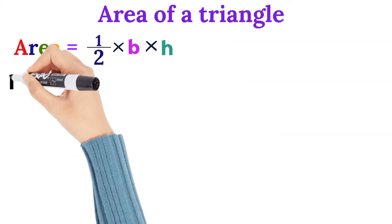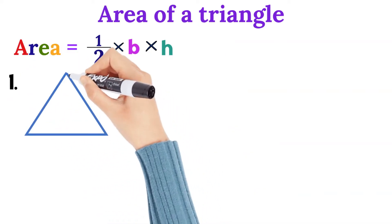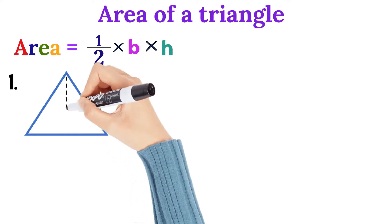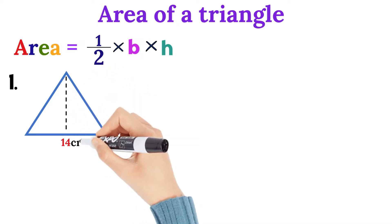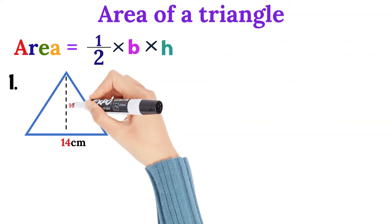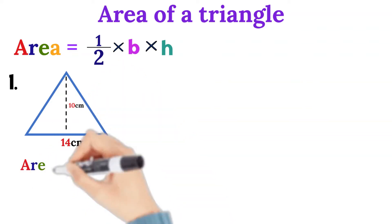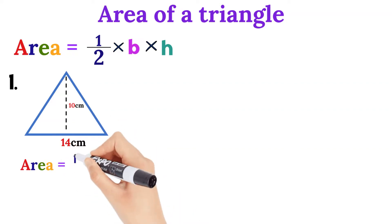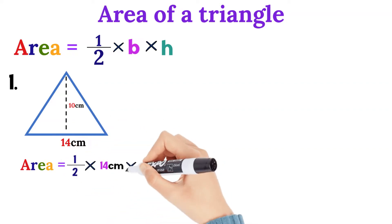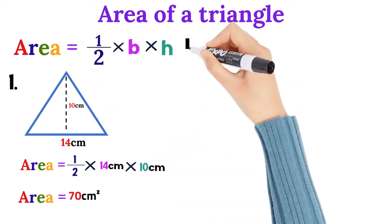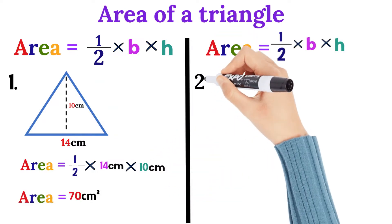If you have triangle number one with base 14 cm and height 10 cm, what's the area? The area will be half of the base, which is 14. Half of 14 is 7. 7 times 10 is 70 cm squared, because cm times cm gives you cm squared.